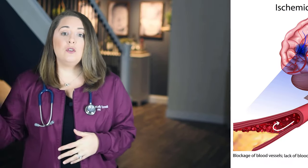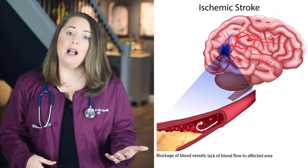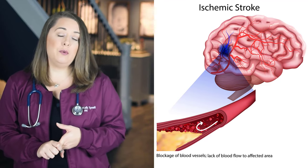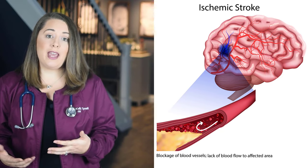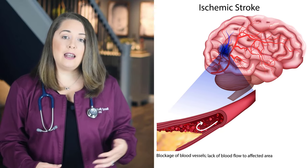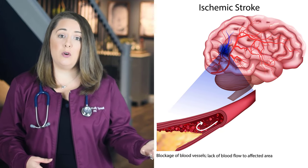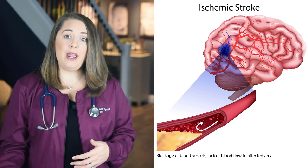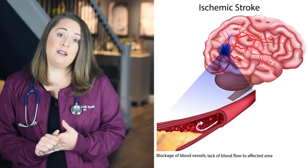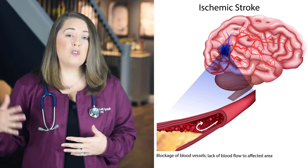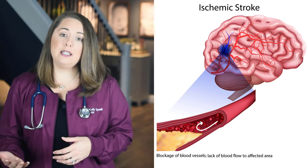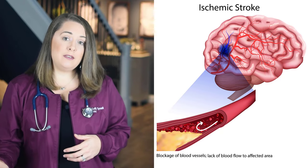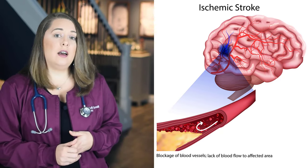Interruption in blood supply to the brain can happen one of two ways. The first way is through an obstruction or blockage of arterial blood flow, which is referred to as an ischemic stroke. This type of stroke is typically caused by a blood clot or from a piece of plaque that has built up on the arterial wall and broken off and traveled up to the brain. Blood or plaque clots can occur in patients with conditions such as atrial fibrillation, diabetes, heart disease, tobacco abuse, oral contraceptive use, or any other clotting disorder.